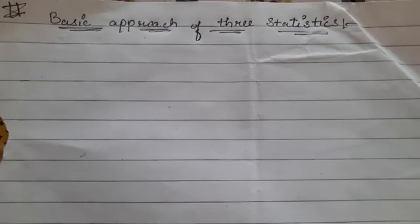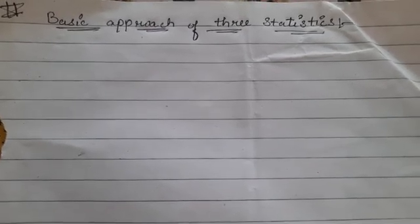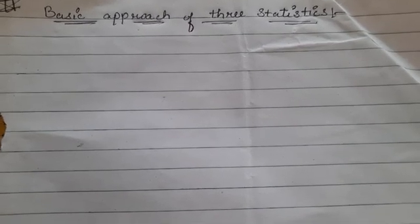Good afternoon everyone. Today's topic is the basic approach of three statistics. As we studied, the basic approach in the three kinds of statistics — Maxwell-Boltzmann, Bose-Einstein, and Fermi-Dirac — is essentially the same. Due to different assumptions, when the same approach is applied to a system, different results are obtained.